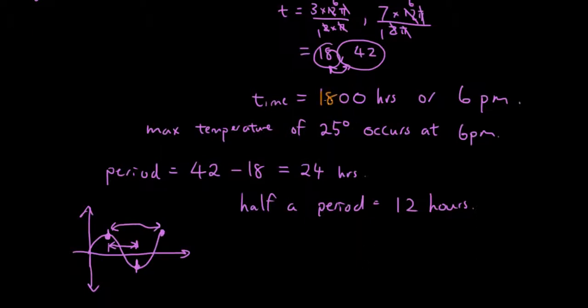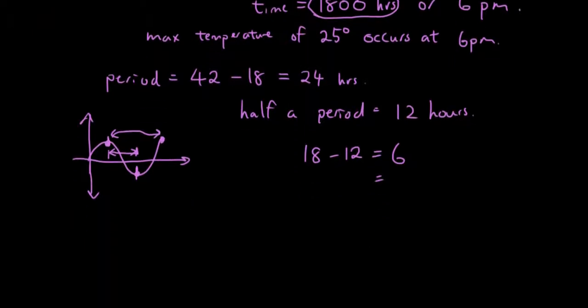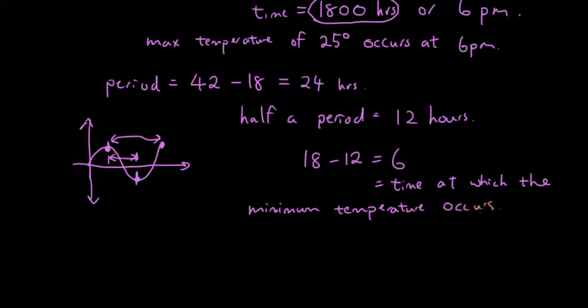Therefore we can simply go, half a period is 12 hours. So we can simply get the time for a maximum. 1800 hours minus 12 hours, so 18 minus 12 is equal to 6. And this is the time at which the minimum temperature occurs.